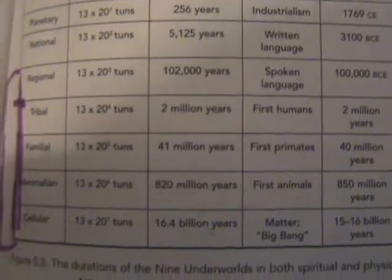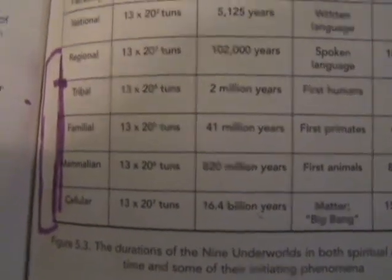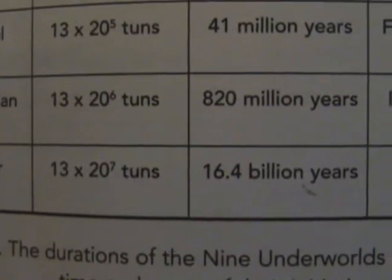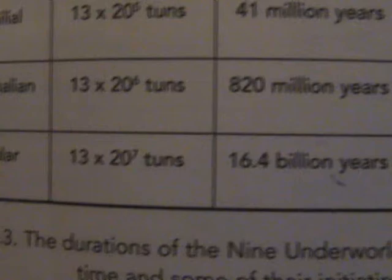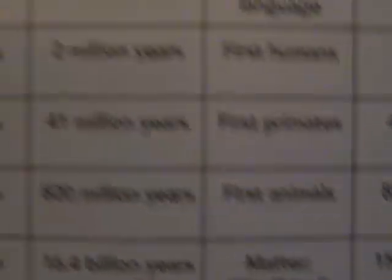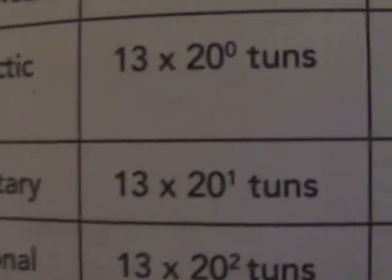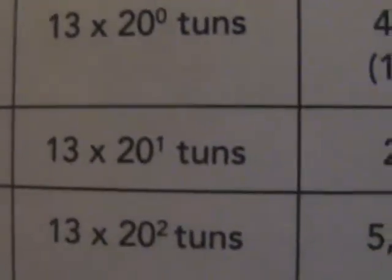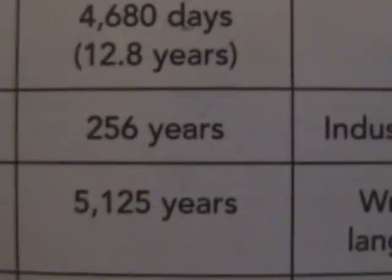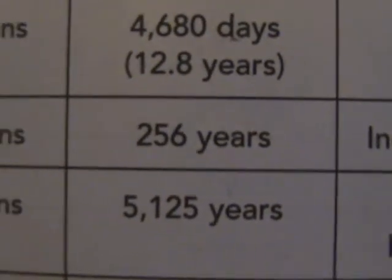I am trying to determine whether this number 20 happens to actually be a real number, and same with the number 13 — do they happen to be an even number or is there a lot of decimals? When I look at the planetary cycle right there — 13 times 20 — what is 13 times 20? That's 260. Yet they have 256. So that got me thinking: what is so big about that number 256?